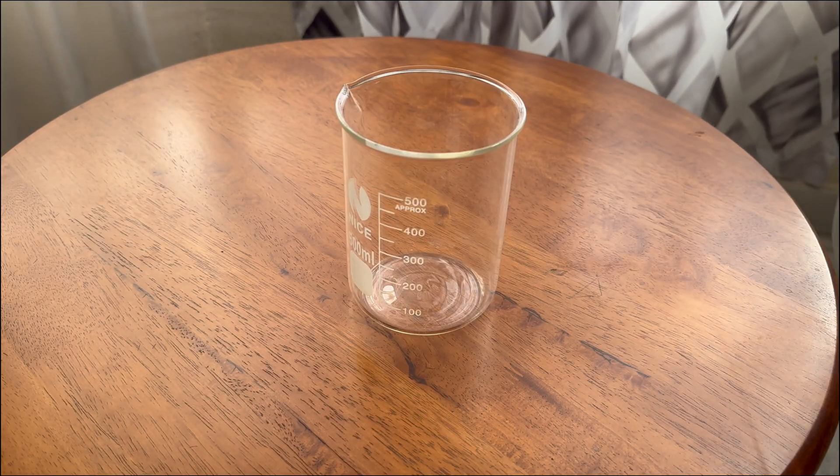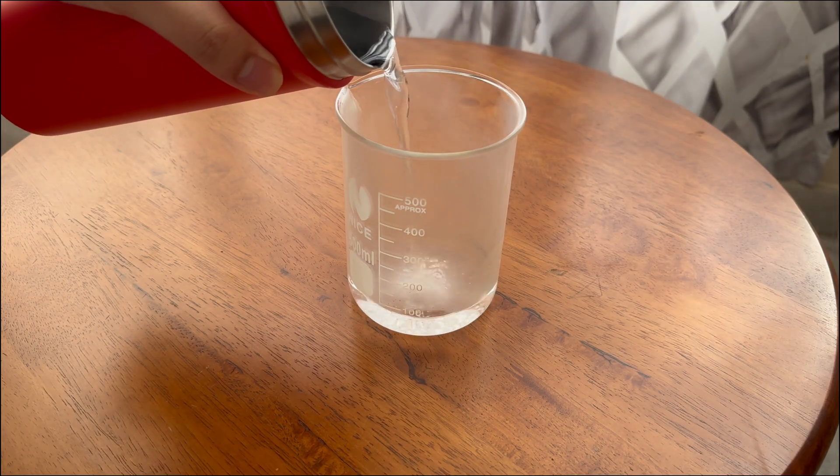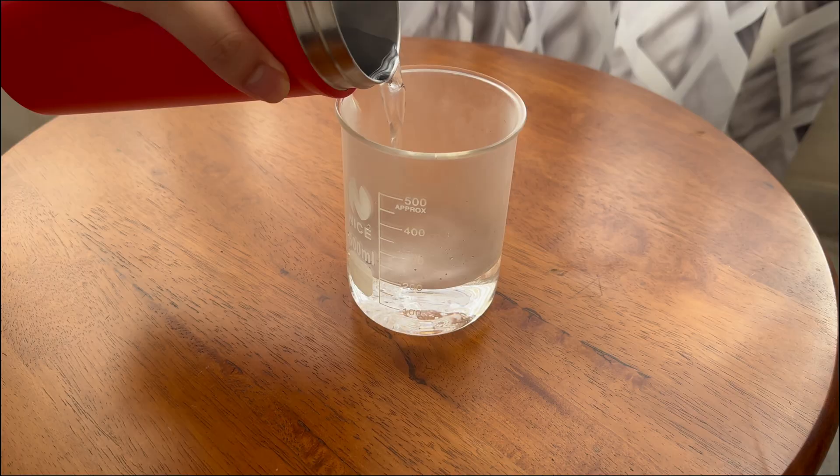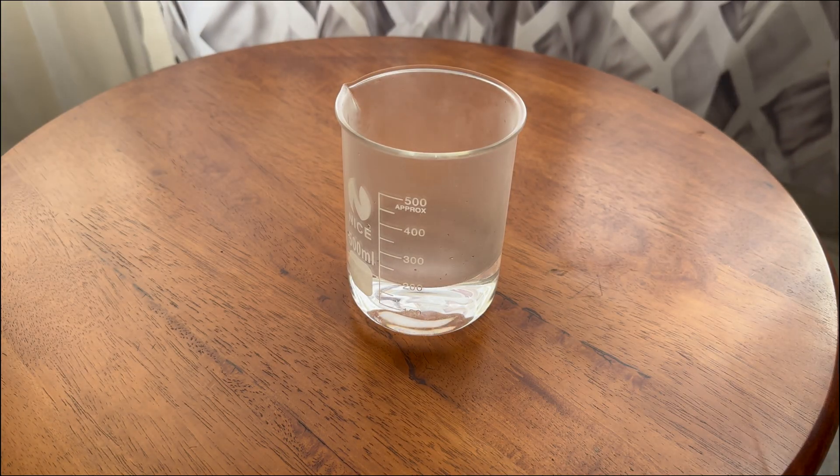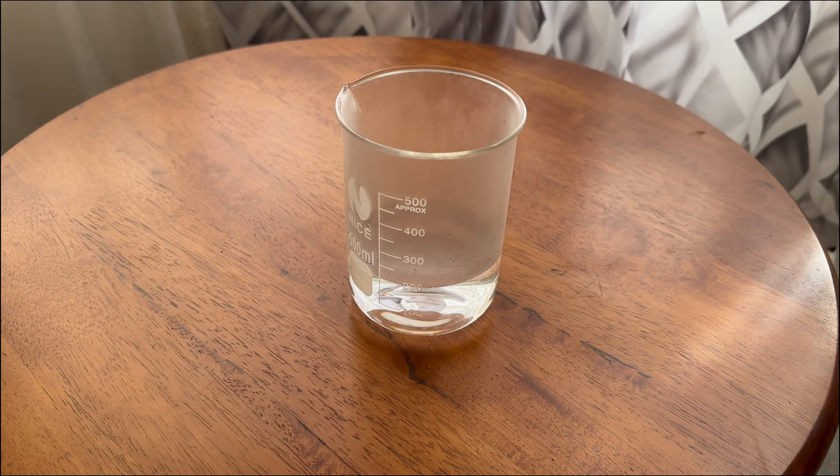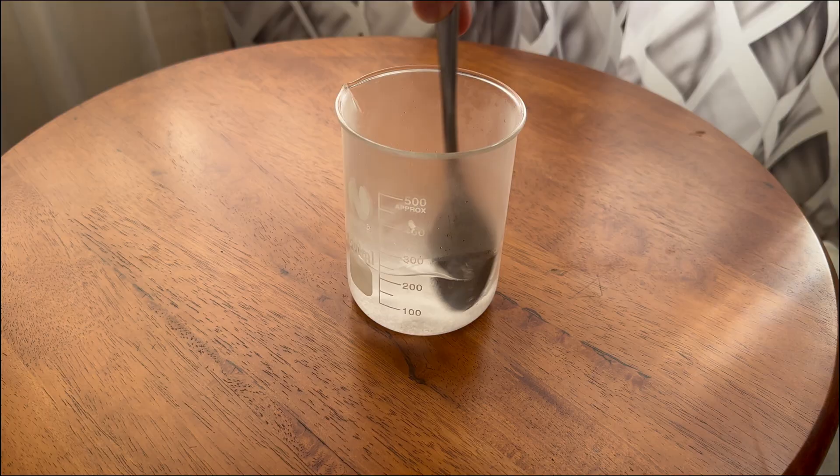We start off by pouring some hot water into our beaker. An approximate amount of 200 milliliters was poured here. Now we start adding salt into the hot water. Take a spoonful of salt and add it into the hot water and start stirring it until it dissolves.